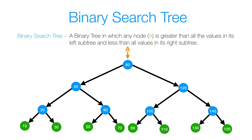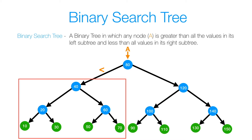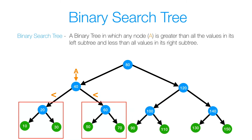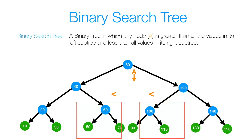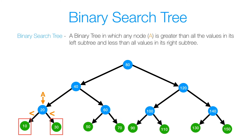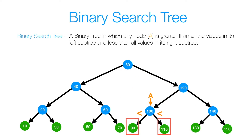Looking at our root node 80, all the values to the left of 80 are going to be smaller than 80, and all the values to the right of 80 are going to be larger than 80. And that applies to every single node in our binary search tree, where all the values to the left of that node are smaller, and all the values to the right are larger.